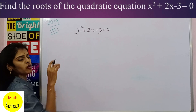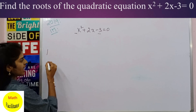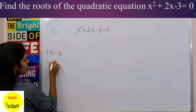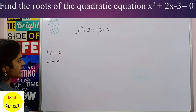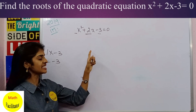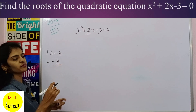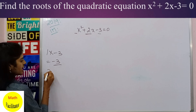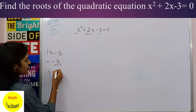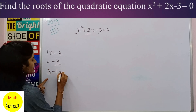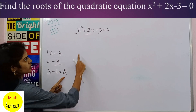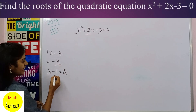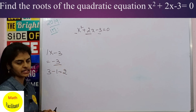The x² coefficient is 1, and the constant term is -3, so the product is -3. You split the middle term so that the sum is 2 and the product is -3. So 3 and -1: 3 minus 1 is 2, and 3 into -1 is -3.